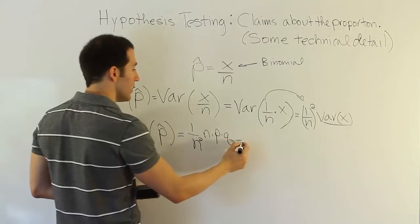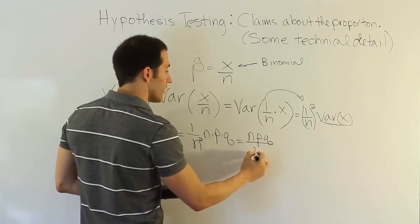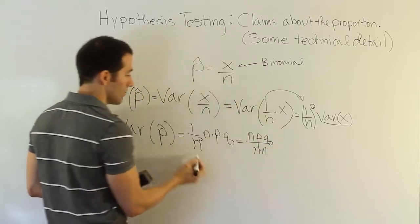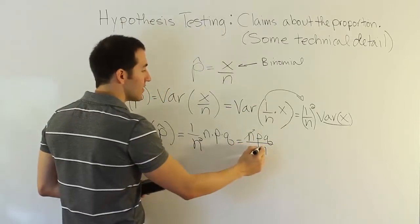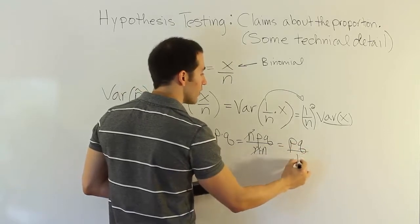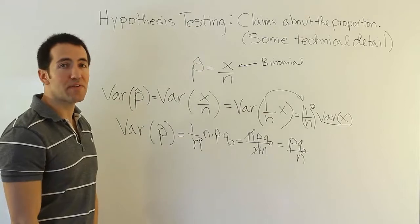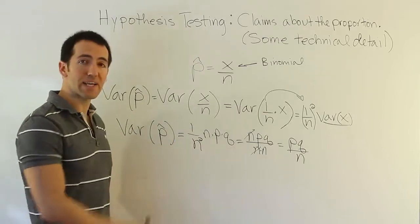And then just do a little cleanup. That's the same as npq over n times n, n squared. And you cancel out the n, and you end up with pq over n. That's your variance for p-hat. Once you know the variance, you can get the standard error by taking the square root.